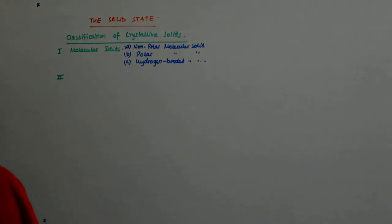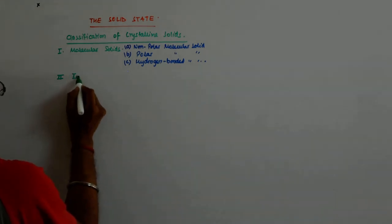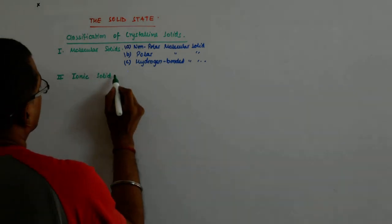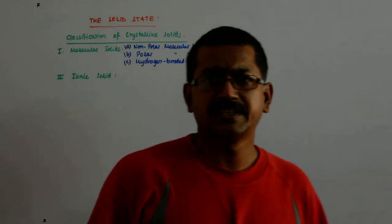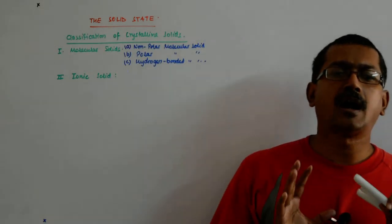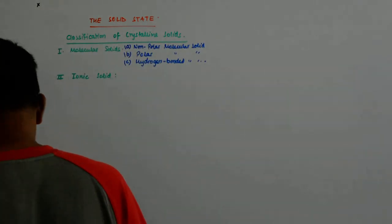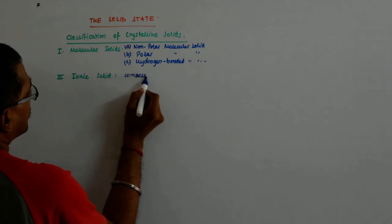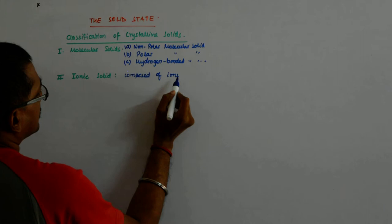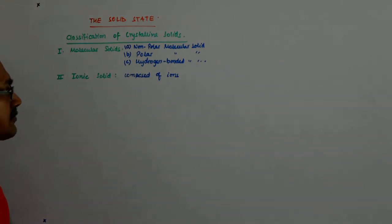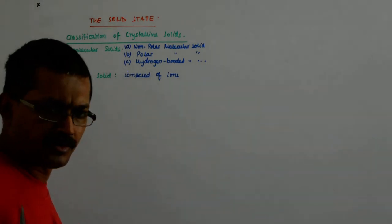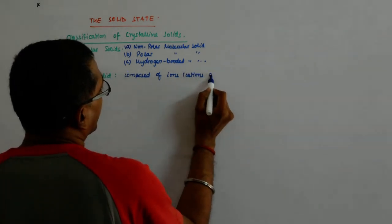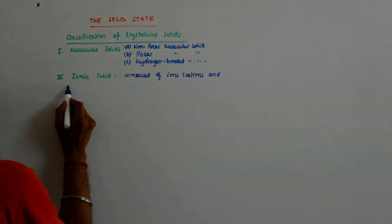So this is second. Second is the ionic solid. As the name suggests, they are composed of ions—that is, both cations and anions.